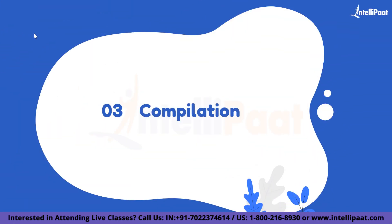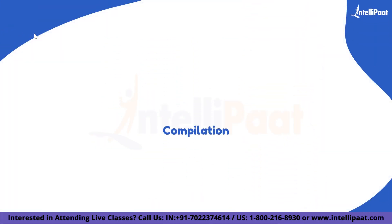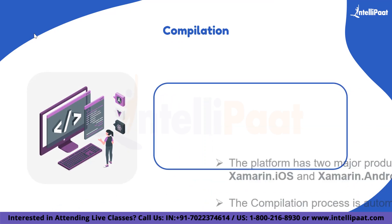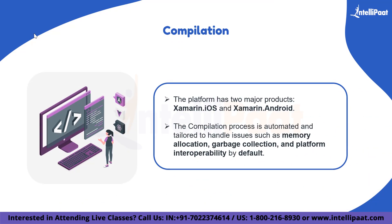As C# is one of the .NET framework languages, it can be used with useful .NET features such as lambdas, LINQ, and asynchronous programming — utilizing async and await functions to manage multiple processes at a time. The third big feature is compilation. Xamarin has two major products: Xamarin.iOS and Xamarin.Android. For iOS, source code is compiled directly into native ahead-of-time assembly code, while Android apps are first compiled to intermediate language and then into native assembly code at runtime.